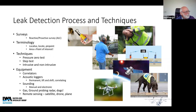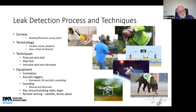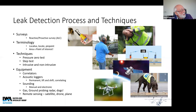Some of the more esoteric techniques include tracer gas and ground-probing radar. Dogs are being looked at — not in the book formally, but it's quite good to mention and have a photograph. And then the move into remote sensing of leaks using satellite, drone, or planes.